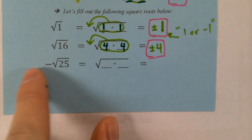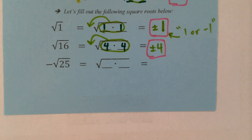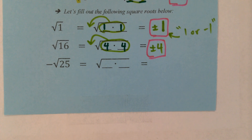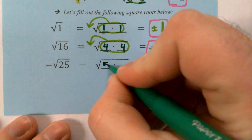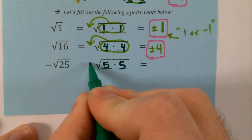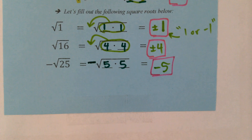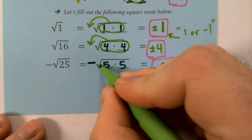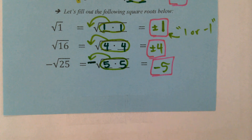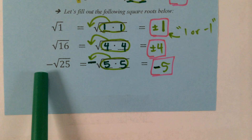For the last one, we've got a negative sign out in front with 25 inside the square root. What two numbers multiply to give me 25? 5 times 5 — exactly. Now we can't forget there's a negative sign out in front. So what's our final answer? Negative 5 — that's exactly right. We take the 5s out, they become 1 out in front with that negative sign, so our answer is just negative 5. Not plus or minus 5 — just negative 5 when there's a negative sign out in front.